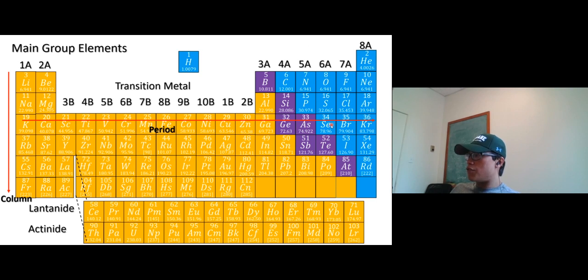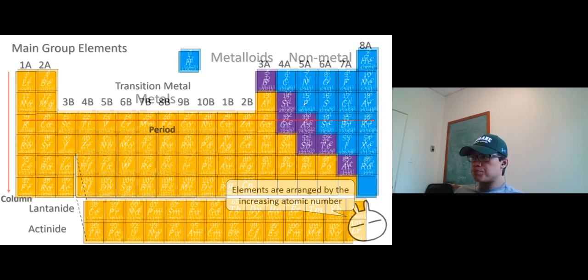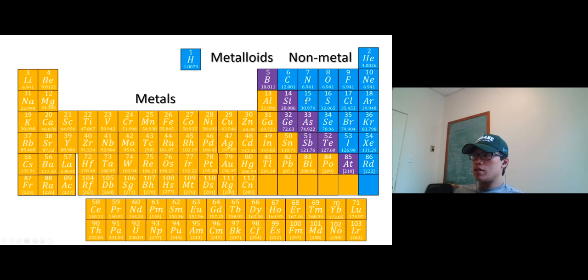Something like that. All right, so in the new periodic table, the elements are arranged by increasing atomic number. Atomic number: one, two, three, four, five, six, seven, eight, nine, ten—not atomic weight, not like Mendeleev.